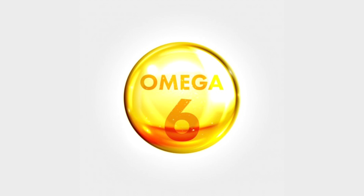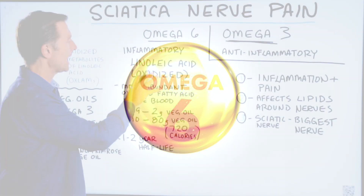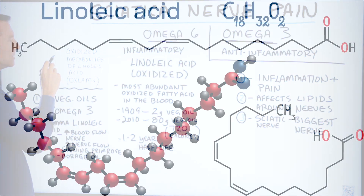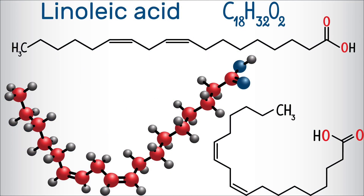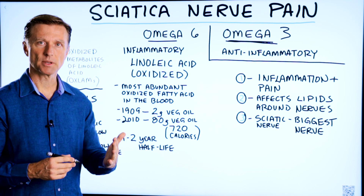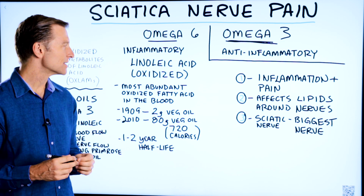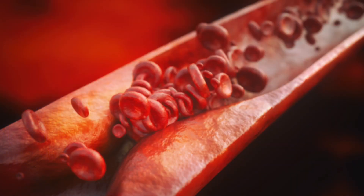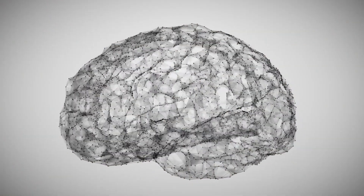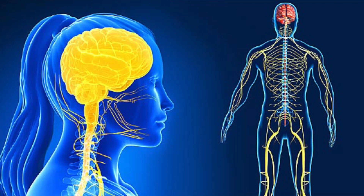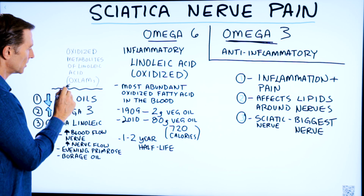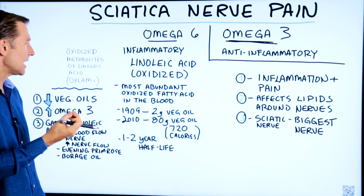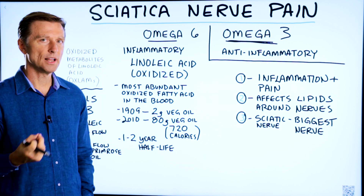Let me touch on omega-6 for a bit. It's called linoleic acid. There's a condition called oxidized metabolites of linoleic acid — when these fats or their byproducts become oxidized, it creates a massive inflammatory situation in the body: in the arteries, in your brain, in the nervous system. This compound, also known as OXLAM, is the most abundant oxidized fatty acid in your blood.